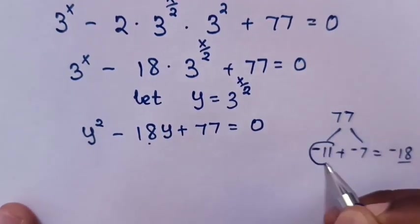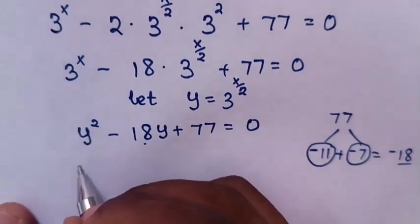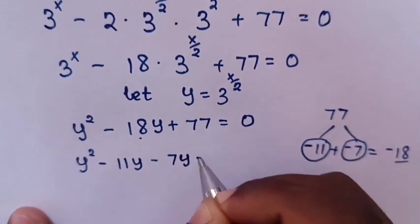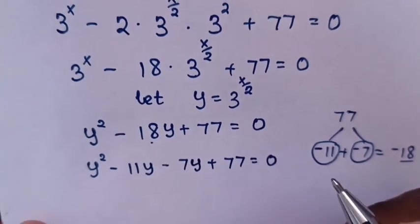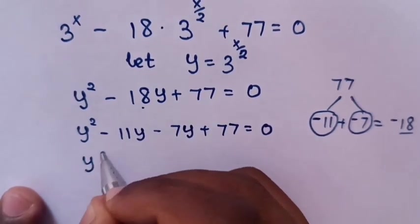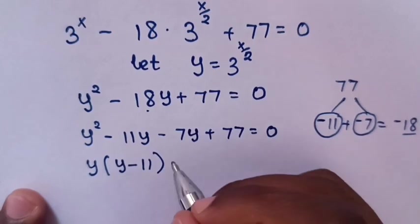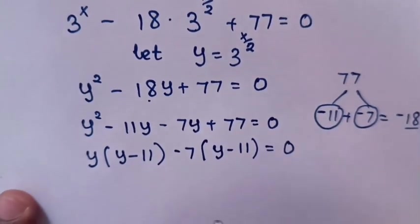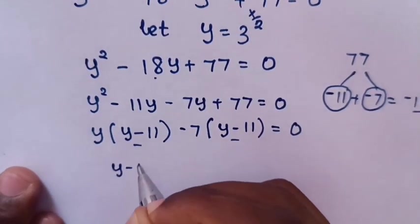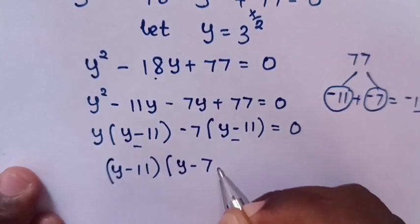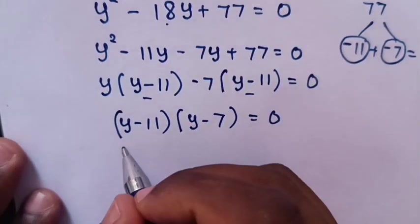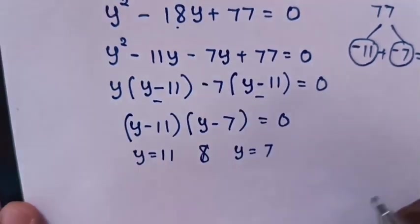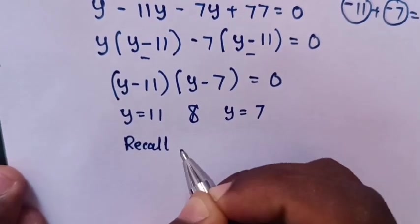Negative 11 times negative 7 equals 77, and negative 11 plus negative 7 equals negative 18. So the factors are negative 11 and negative 7. Our equation becomes y² minus 11y minus 7y plus 77 equals 0, which factors as y(y minus 11) minus 7(y minus 7) equals 0, giving (y minus 11)(y minus 7) equals 0. Therefore y equals 11 or y equals 7.